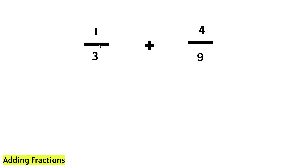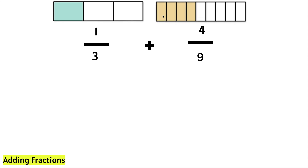Let's add 1 third plus 4 ninths. We have 1 third and 4 ninths. We notice that these fractions have unlike denominators. This fraction has a denominator of 3, and this fraction has a denominator of 9.